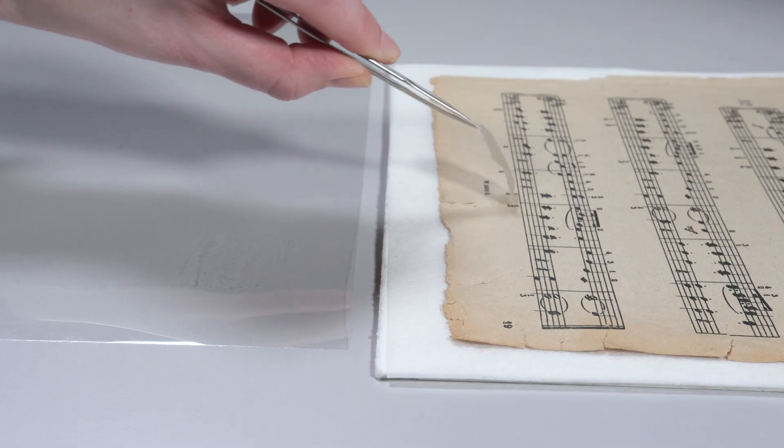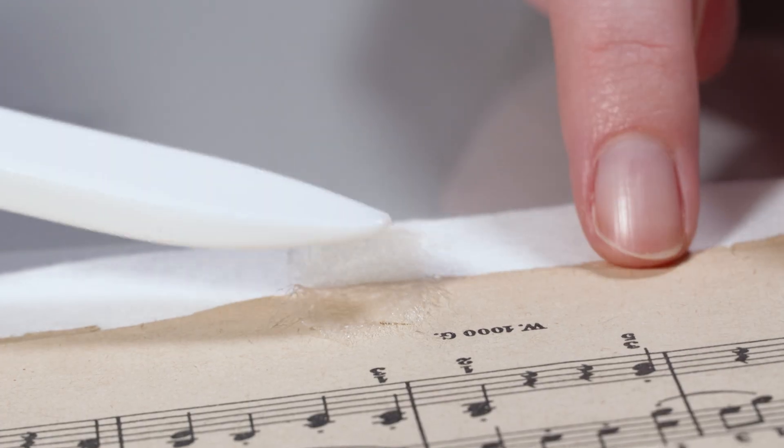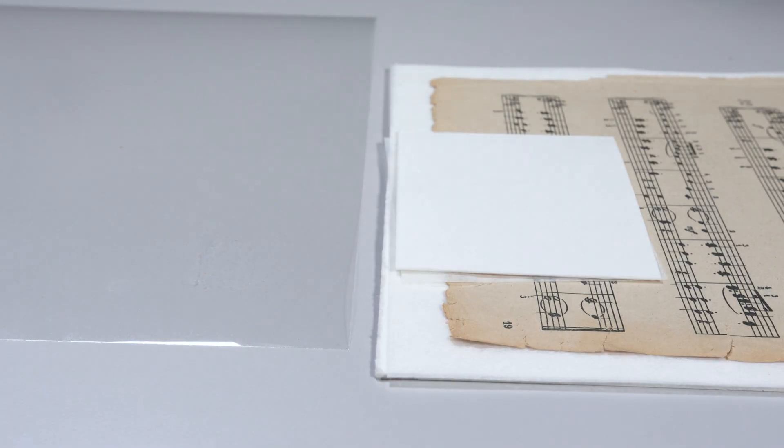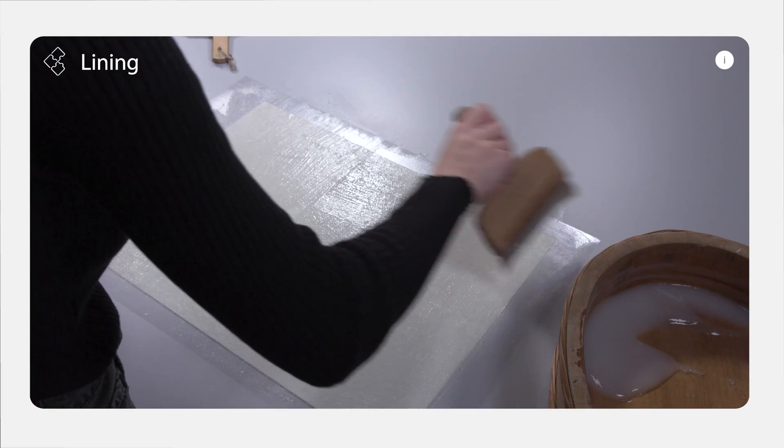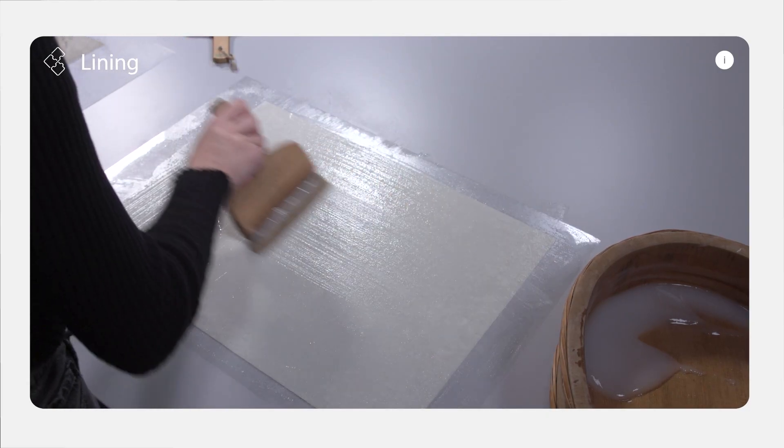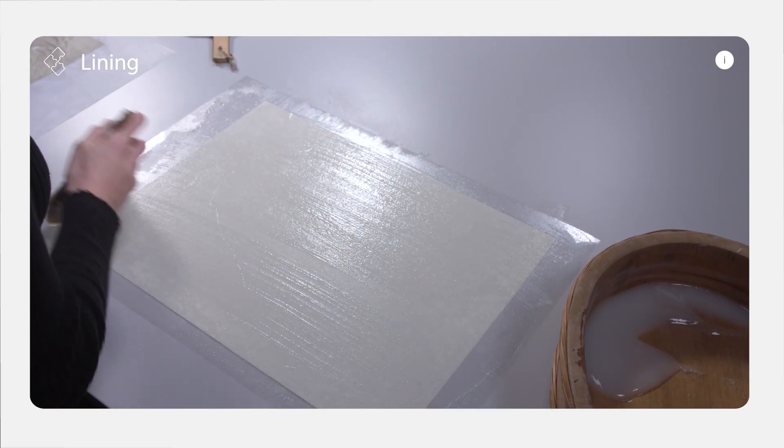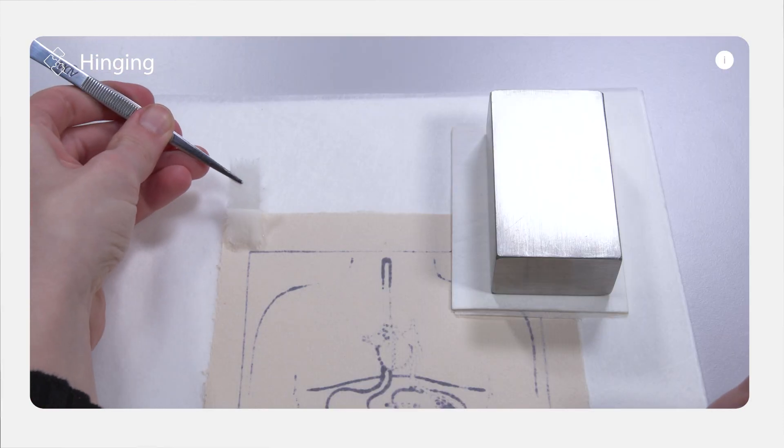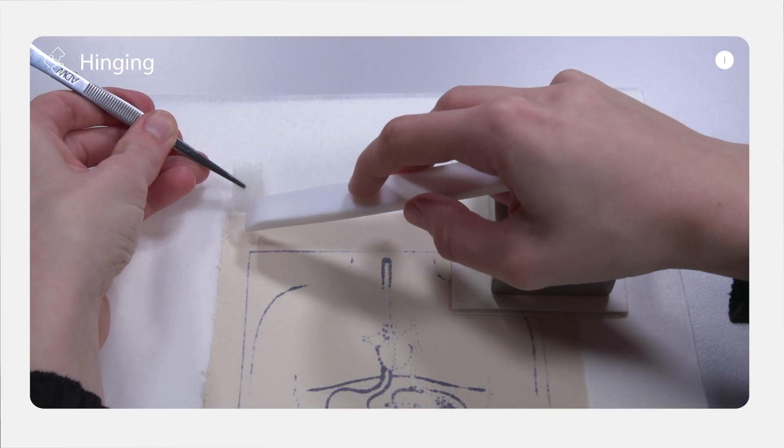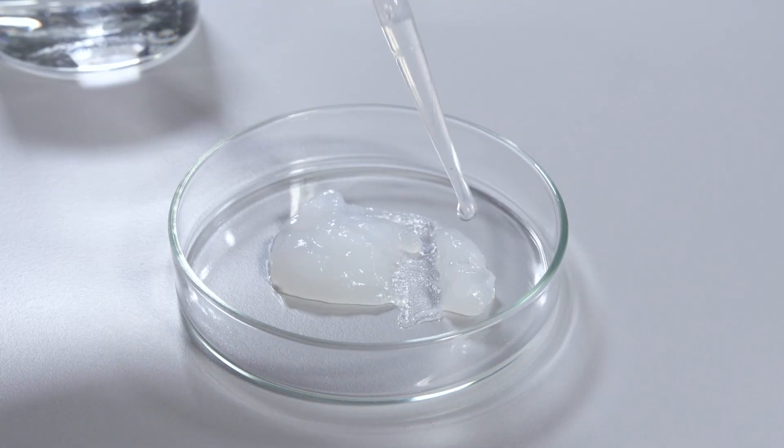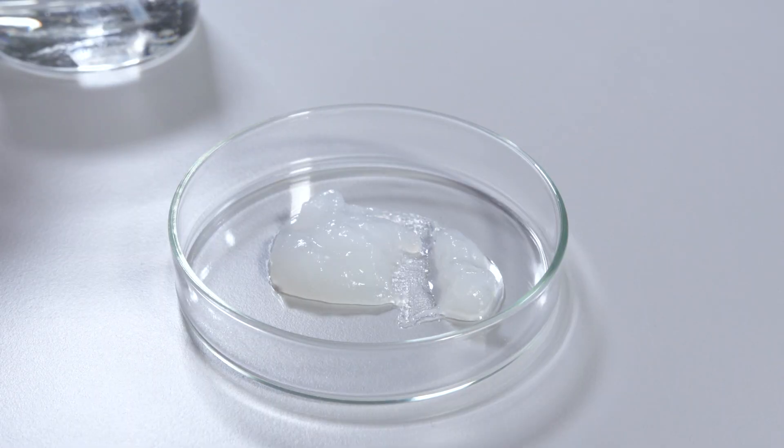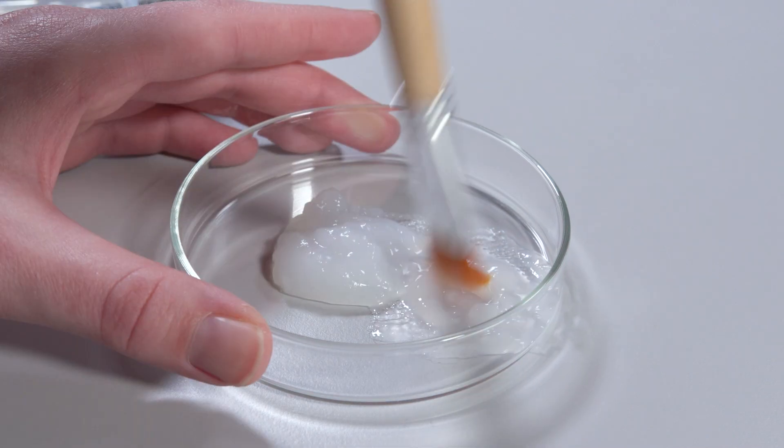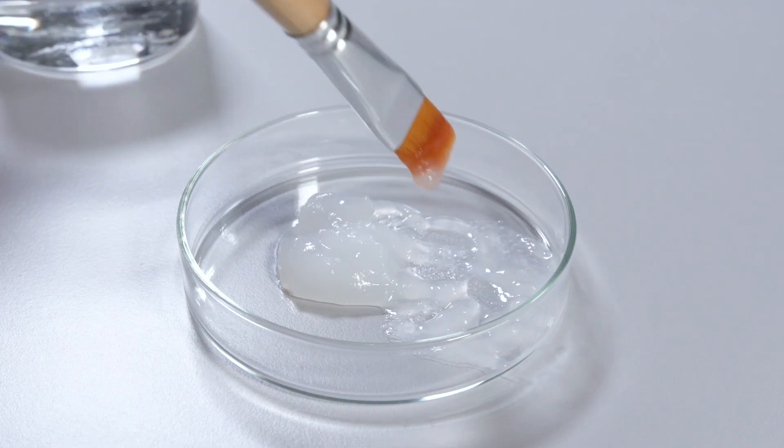Starch paste is a very versatile adhesive. For example, it can be used for mending tears, lining, or various backings. Its viscosity can be varied depending on the amount of water added to the mixture, modifying the paste based on the type of application.